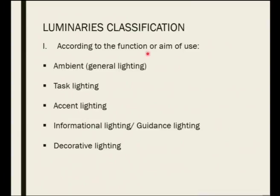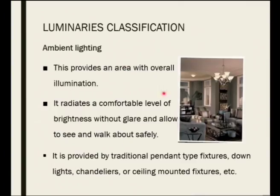Based on function, lighting is classified as ambient or general lighting, task lighting, accent lighting, informational or guidance lighting, and decorative lighting. Ambient lighting is the general lighting provided for any place — a workplace or residential area — that illuminates the overall space, gives comfortable brightness without glare, and allows people to walk and see safely. For ambient lighting you generally use pendant-type fixtures, downlights, chandeliers, and ceiling boundary fixtures.